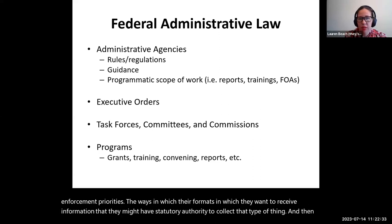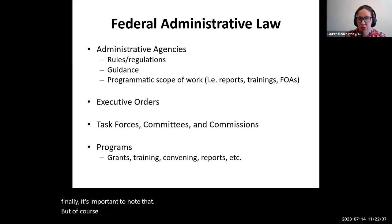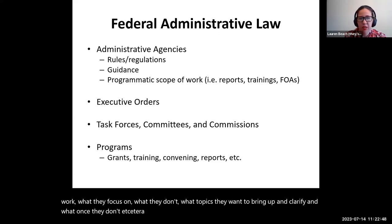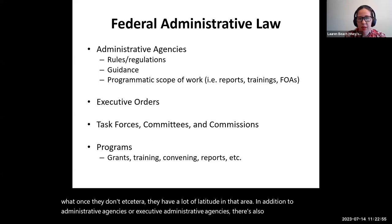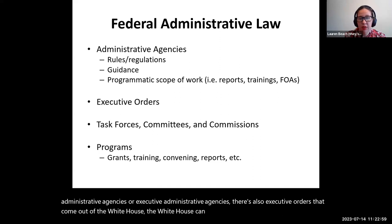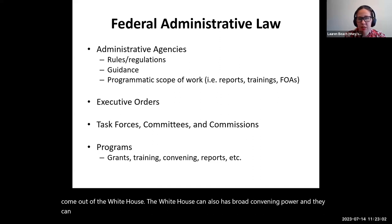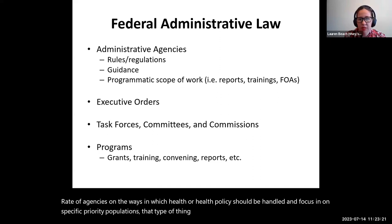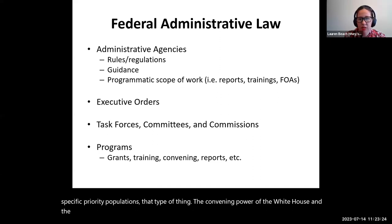It's important to note that executive agencies get to decide their programmatic scope of work — what they focus on, what topics they want to bring up and clarify, and what ones they don't. They have a lot of latitude in that area. In addition to administrative agencies, there are also executive orders that come out of the White House. The White House also has broad convening power and can set up task forces, committees, and commissions to advise the president, the White House, or executive administrative agencies on how health or health policies should be handled and focused on specific priority populations.